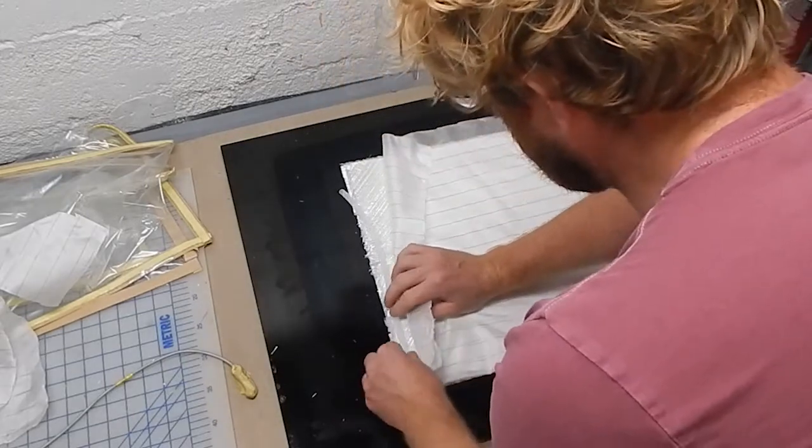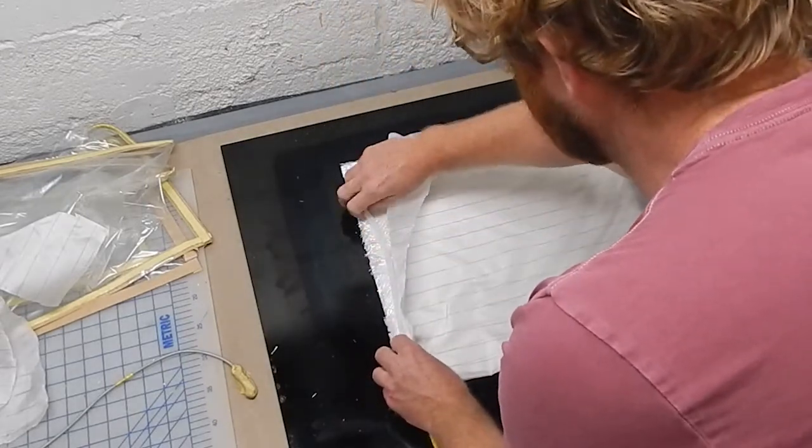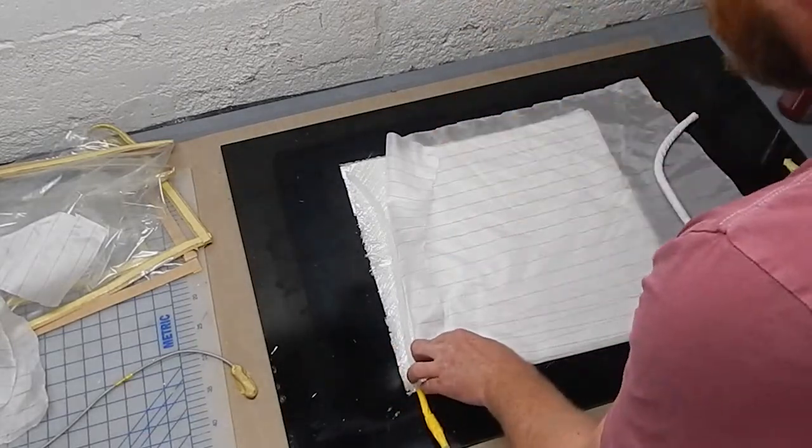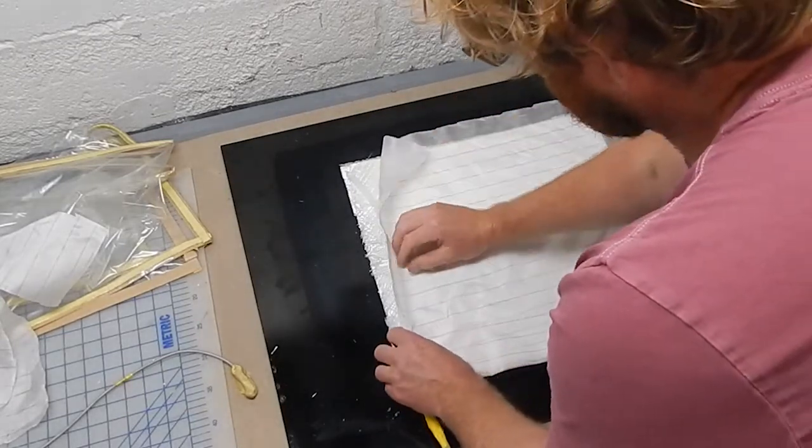I'm going to tuck in the feed side underneath the peel ply, lapping onto the glass and butting up to the edge of the soric so the resin will be able to flow out of that feed line and right into the soric which will serve as the flow media.